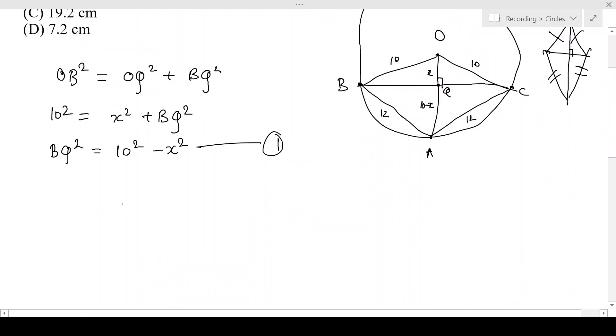Now let's take the lower triangle, that is AB square is equal to AQ square plus BQ square. So AB square that is 12 square is equal to AQ that is 10 minus X whole square plus BQ square. That gives us BQ square is equal to 12 square minus 10 minus X whole square. This is equation number 2.